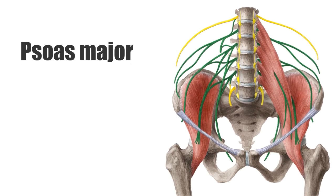The psoas major and iliacus muscle unify in the lateral pelvis shortly before the inguinal ligament, becoming the iliopsoas muscle. There, they pass below the inguinal ligament through the muscular lacuna together with the femoral nerve. Both muscles are completely surrounded by the iliac fascia.